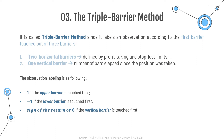This alternative labeling method was created by the author and consists of labeling an observation according to the first barrier touched out of three barriers. Two horizontal barriers are defined by profit-taking and stop-loss limits, which are dynamic functions of the estimated volatility that do not need to be symmetric, and a third vertical barrier defined in terms of the number of bars elapsed since the position was taken.